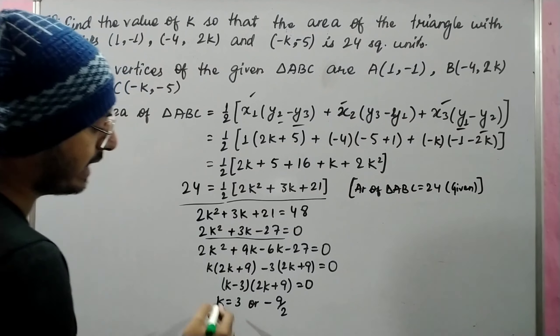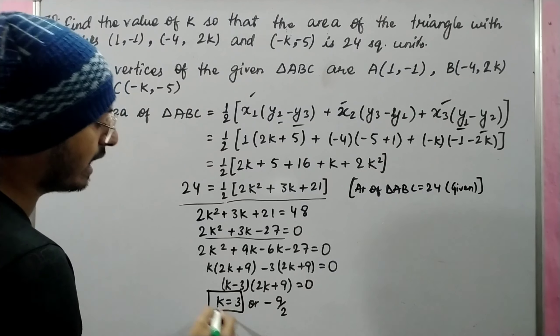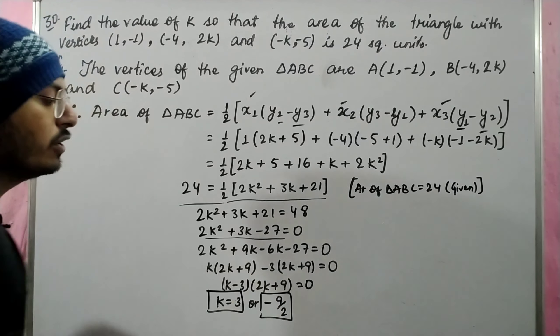We have solved this. K is equal to 3, and K is equal to minus 9 upon 2.